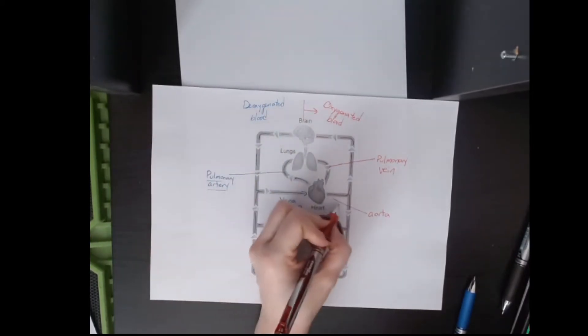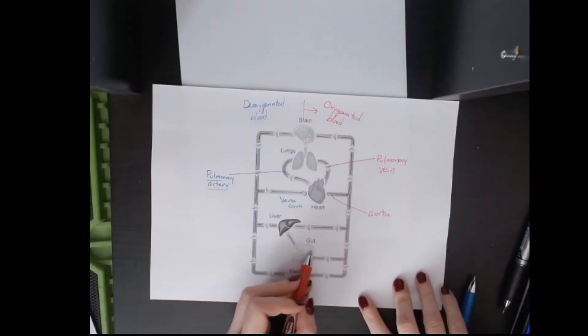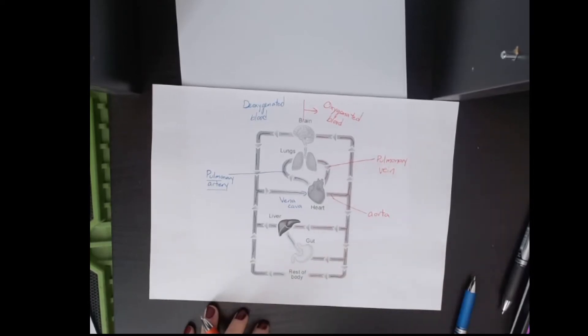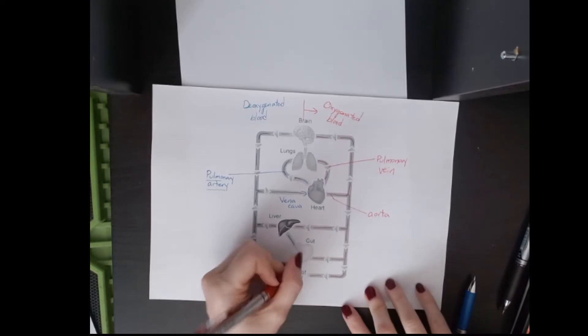So here, that one's the aorta. And then it goes to the liver and the gut. You need to know what these are called. Oh, and I just realized the kidneys aren't on here. I will draw in a kidney.